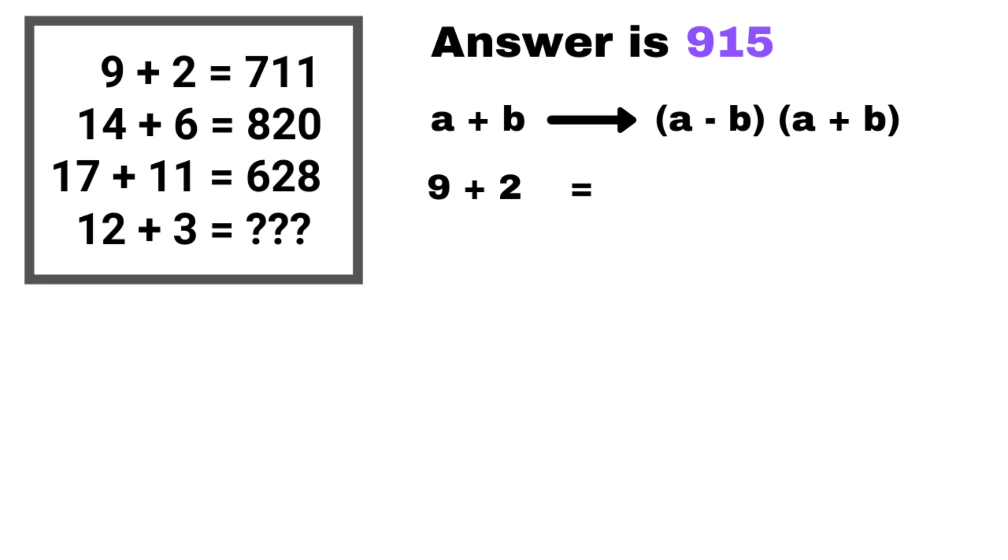For example, consider the first line which is 9 plus 2 equals 711. The difference between the two numbers is 7 and the sum is 11. Now write the answers one next to the other and the answer is 711.